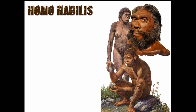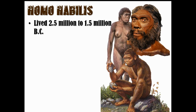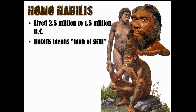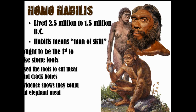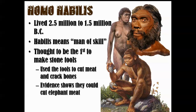Next we have the Homo habilis, who lived from 2.5 million to 1.5 million BC — our next stage of human evolution. Habilis means 'man of skill.' As you can see, he's holding rocks, trying to figure out how to use them. He's thought to be the first to make stone tools — basically using rocks to cut meat and bones. They probably just found a rock and started hitting things with it hoping it would cut.